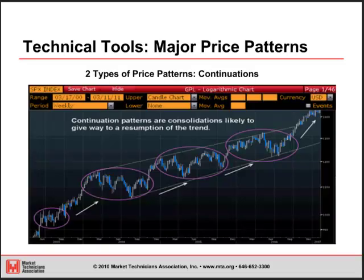The first major type of price pattern is continuation. Continuation patterns are basically consolidations that are likely to give way to a resumption of the trend. Here, what we saw was the S&P from 2003 to about 2007 — it was already in an uptrend and then you see a two-month sideways trend. It's not reversing; it breaks out and then continues that uptrend.